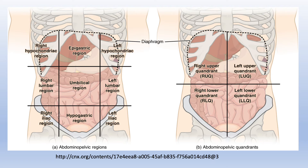Right lower quadrant: cecum, appendix, part of the small intestines, the right female reproductive organs, and the right ureter. Left upper quadrant has the left portion of the liver, the larger portion of the stomach, the pancreas, left kidney, spleen, portions of the transverse and descending colon, and parts of the small intestine.